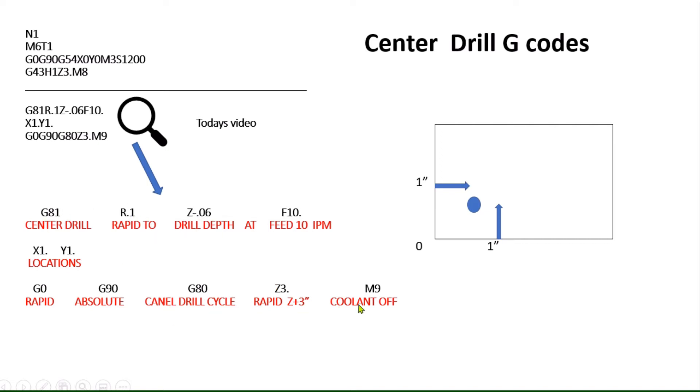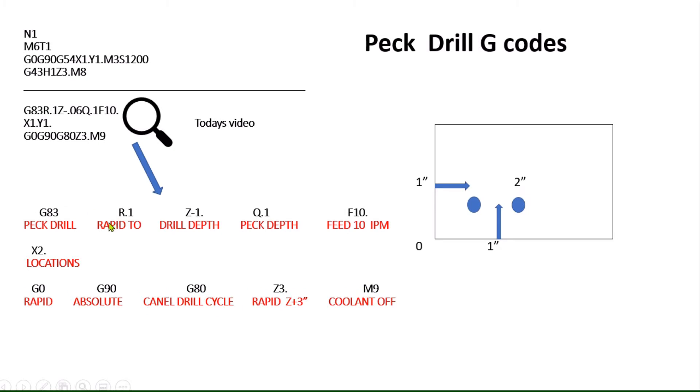How similar it will be, you will see. It's G81, R value rapid to the depth of and the feed rate of your locations, and then you're retracting.